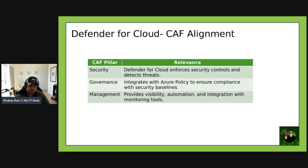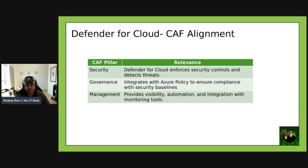Trying to align all this to CAF — that's what this series is about. From a live customer delivery perspective, Defender for Cloud is almost the central nervous system for cloud security. It gives you visibility, control, and protection across your entire environment. It supports multi-cloud and hybrid, making it ideal for enterprises with complex architectures. Think of it as a bridge between governance and operations — it helps you enforce your security baseline and respond to threats in real time. It's modular, so you can start with posture management and then enable Defender plans for deeper protection.